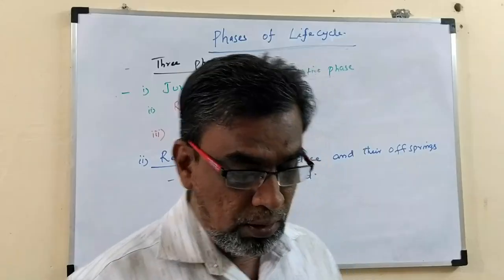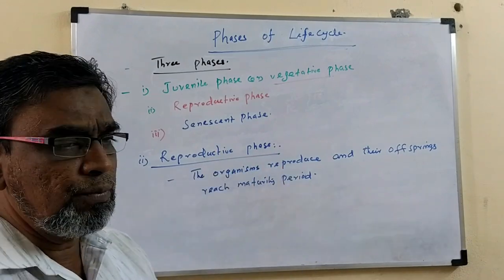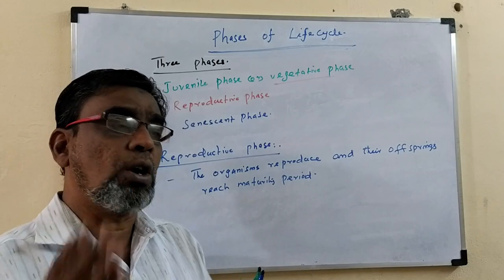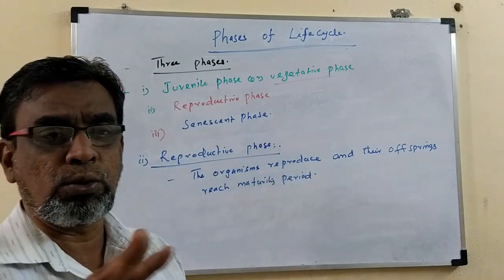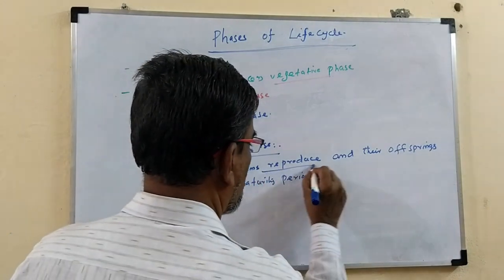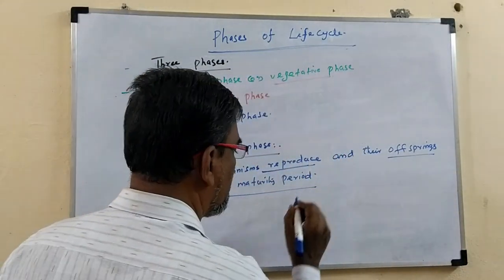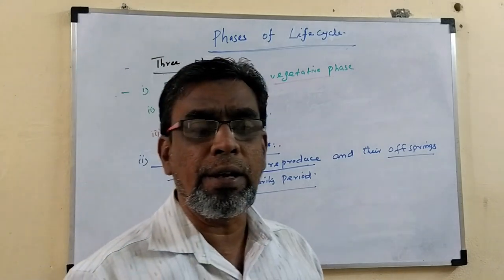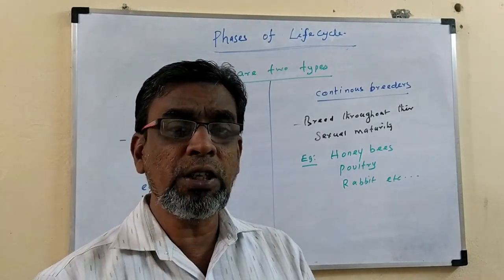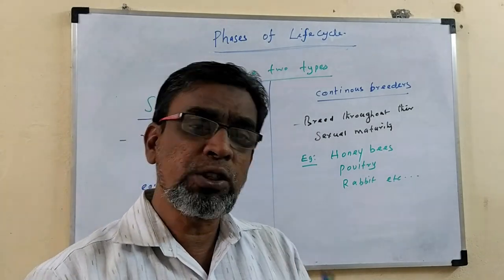In the reproductive phase, the organisms reproduce and give young ones, called offsprings. These offsprings also reach maturity period. So two events take place in this phase: the organisms reproduce, and their new offsprings also reach maturity period.